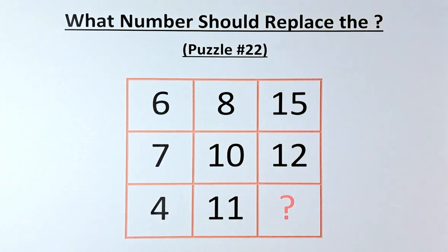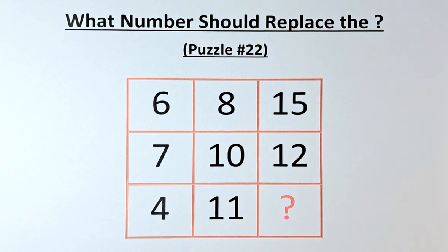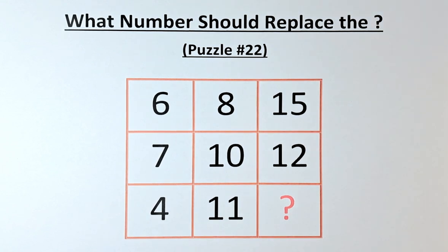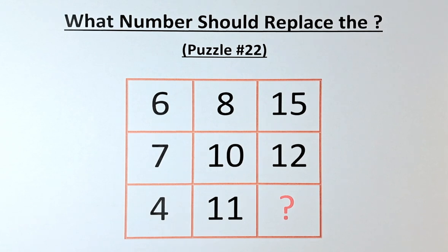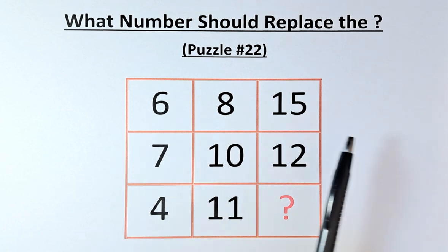So what is the value of the question mark in this puzzle? Without further ado, let's solve this puzzle. You look at the numbers, they are all jumbled up: 6, 8, 15, 7, 10, 12, 4, 11, question mark. It looks most likely that you're going to work in terms of rows.